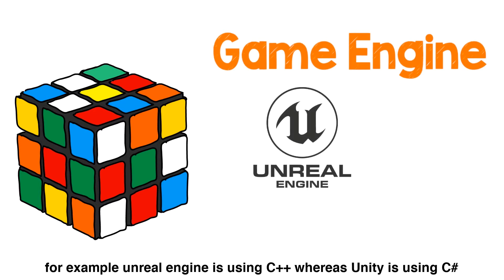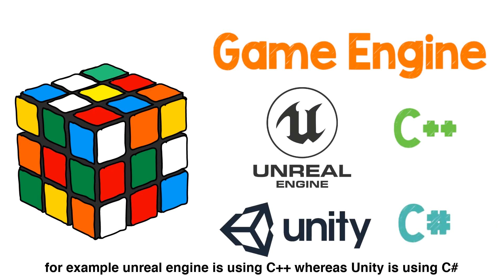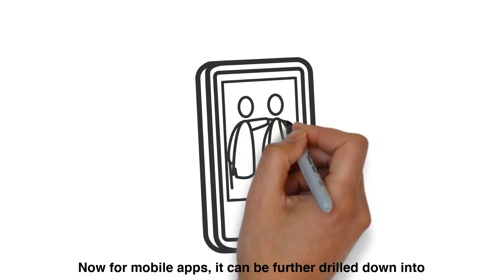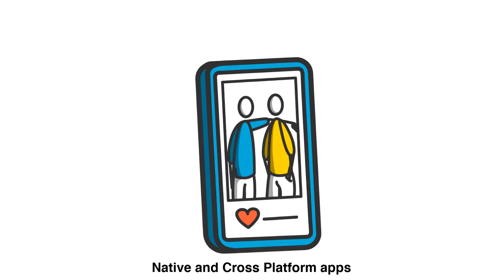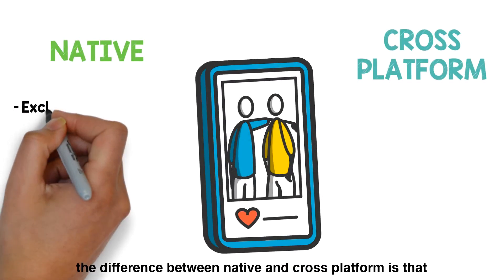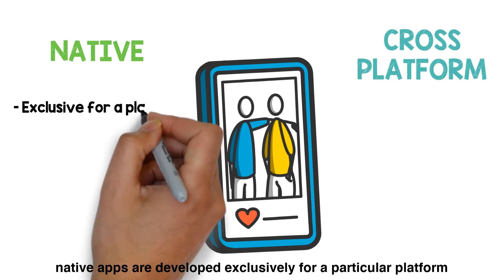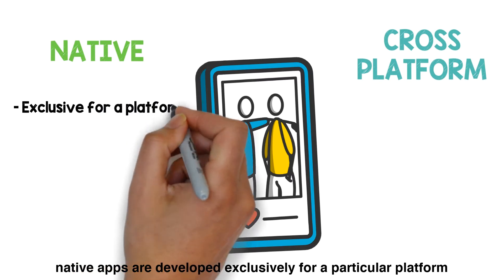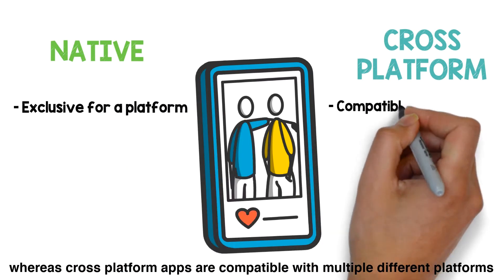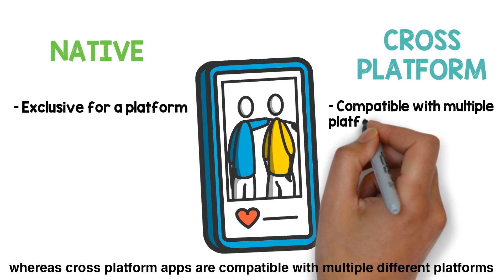For example, Unreal Engine is using C++ whereas Unity is using C Sharp. Now, for mobile apps, it can be further drilled down into native and cross-platform apps. To put it simply, the difference between native and cross-platform is that native apps are developed exclusively for a particular platform, whereas cross-platform apps are compatible with multiple different platforms.